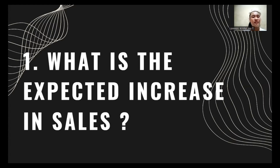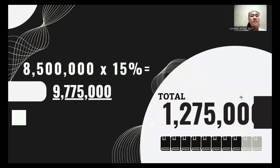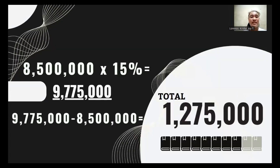Number one, what is the expected increase in sale? To get this: sales of 8,500,000 times 1.15 equals 9,775,000, minus 8,500,000 which is the current sale, equals 1,275,000. So the expected increase in sale is 1,275,000.